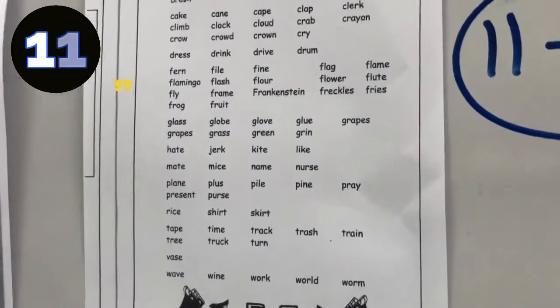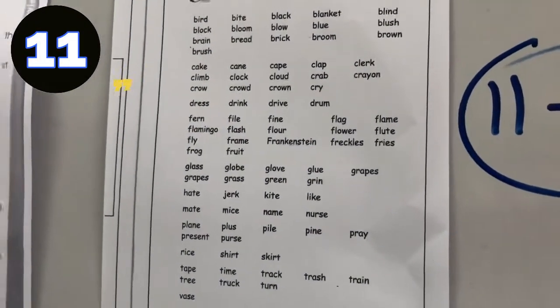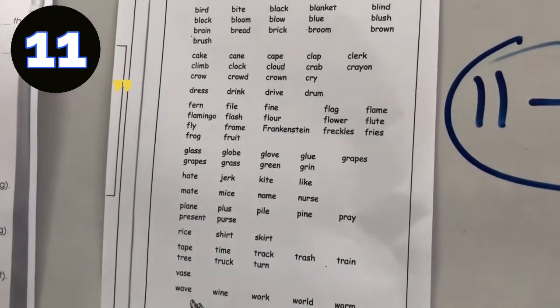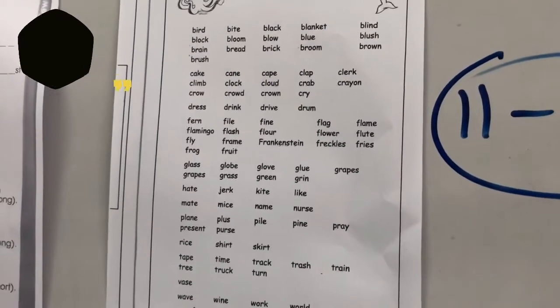Number 11, crown. Crown for a queen or a king. Crown. 11 is crown.